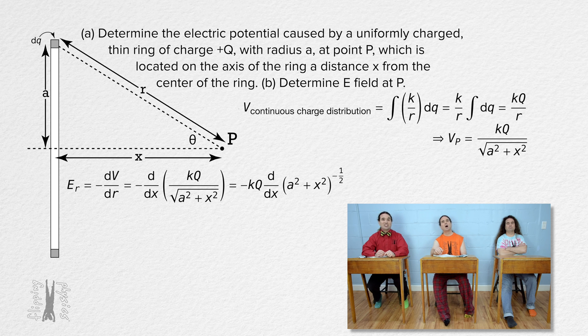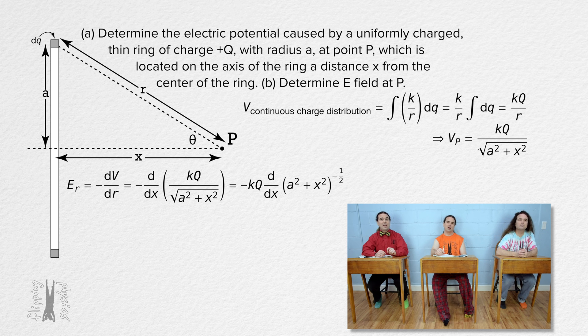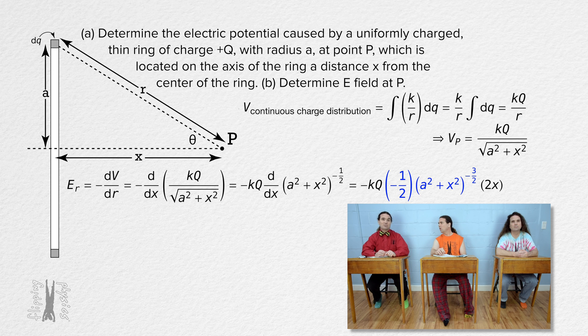Oh, we need to use the chain rule to take this derivative. So the derivative of a squared plus x squared to the negative 1 half power with respect to x equals negative 1 half times the quantity a squared plus x squared to the negative 3 halves power.